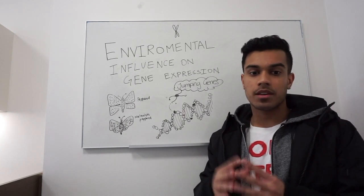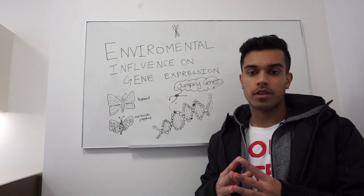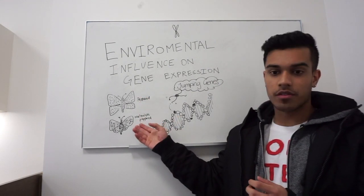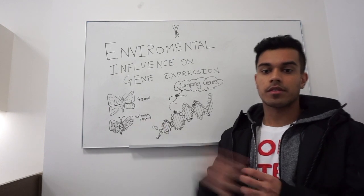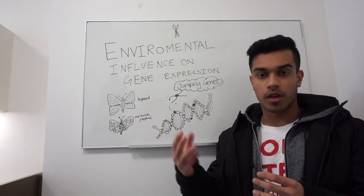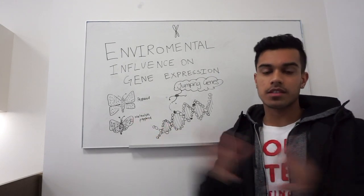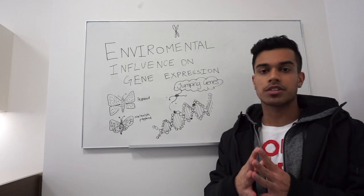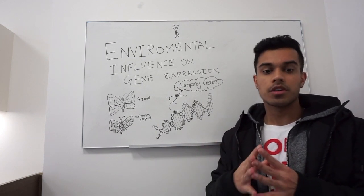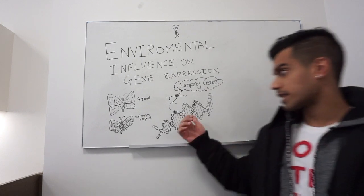In areas that became industrialized, the lighter peppered moths were found and preyed upon, while the melanistic variety of the peppered moths survived, could breed, and passed on the dark wing color. This caused a shift in the phenotype of the Biston betularia population from peppered to melanic. A few years later, scientists discovered that jumping genes cause this.